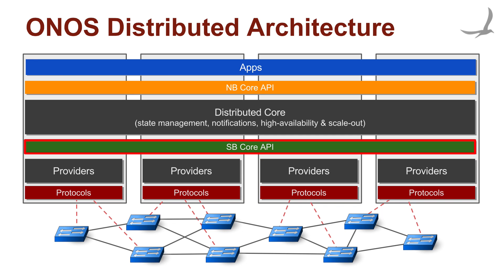The SouthBound API then acts as a bridge for the core to send edicts to and receive sensory data from the various protocol providers. The protocol-independent nature of this API guarantees that no protocol specifics leak into the ONOS core and to the applications. Furthermore, its high-level nature avoids merely shrink-wrapping a specific protocol library, and at the same time it allows ample maneuvering room for the protocol providers to translate protocol-specific behaviors into protocol-agnostic ones.